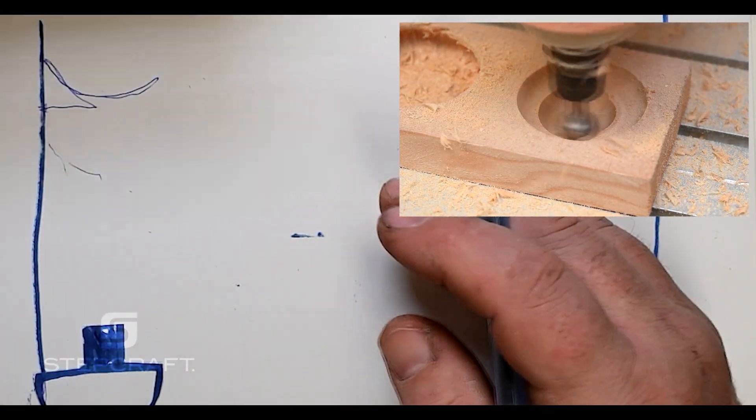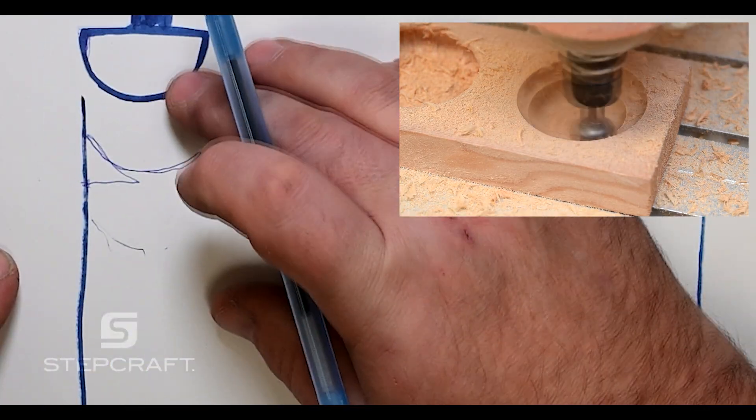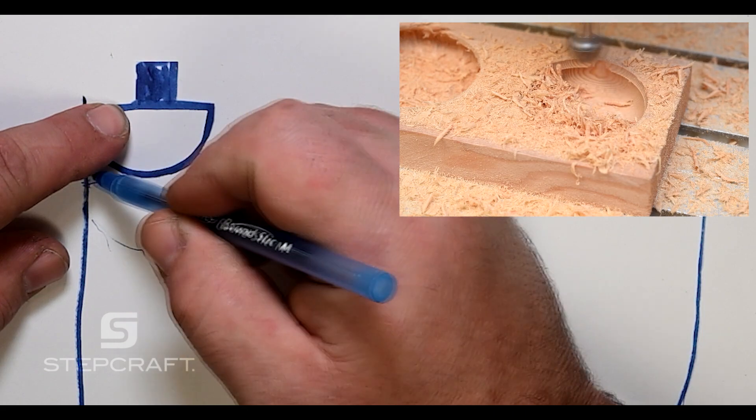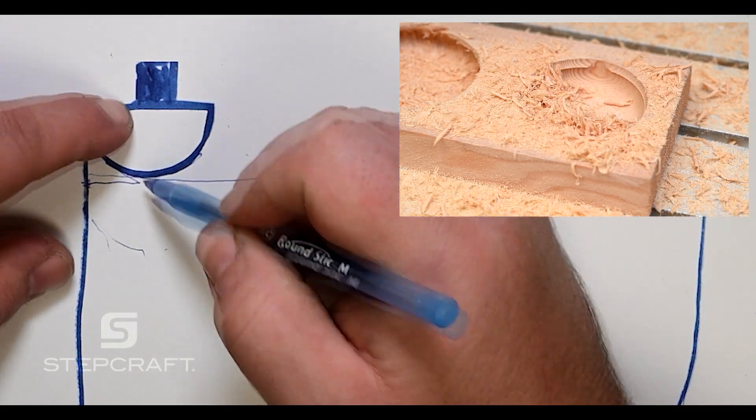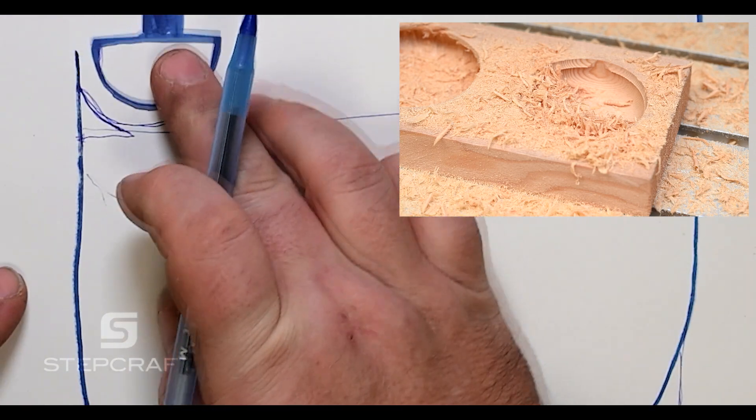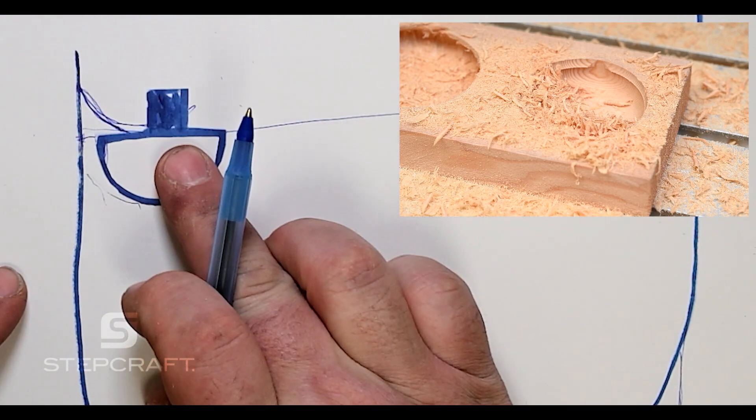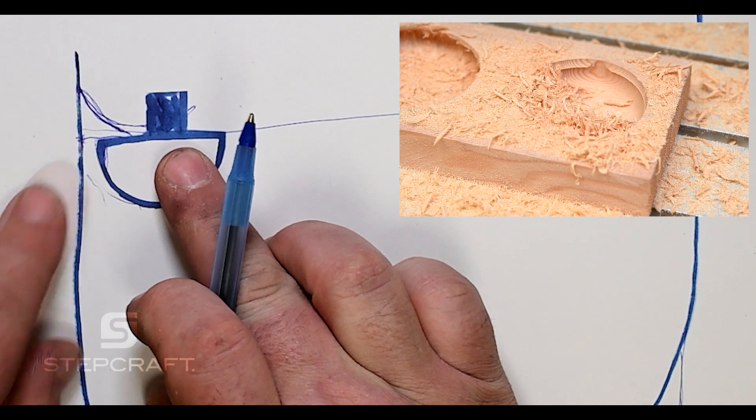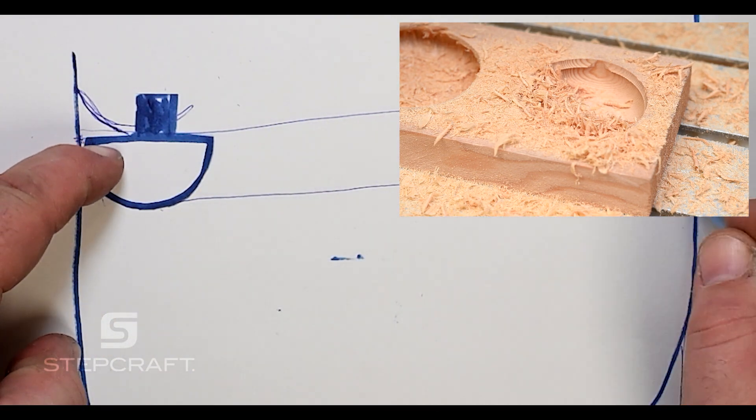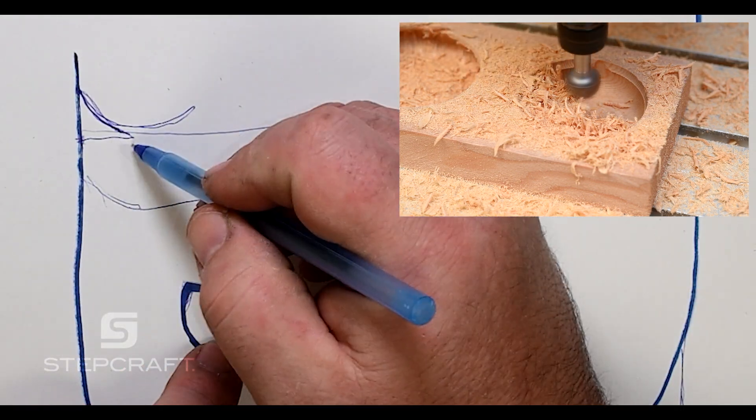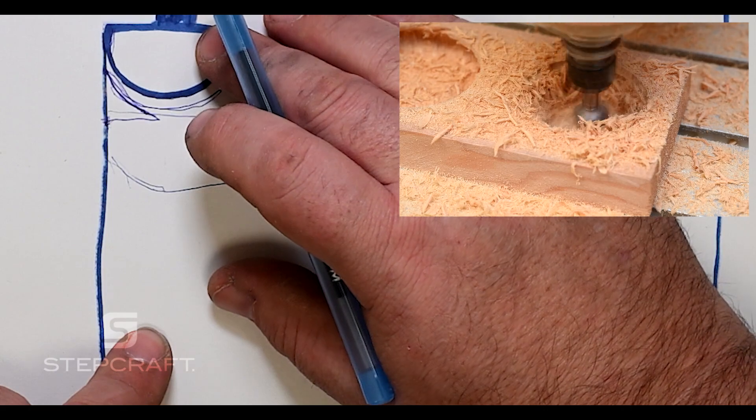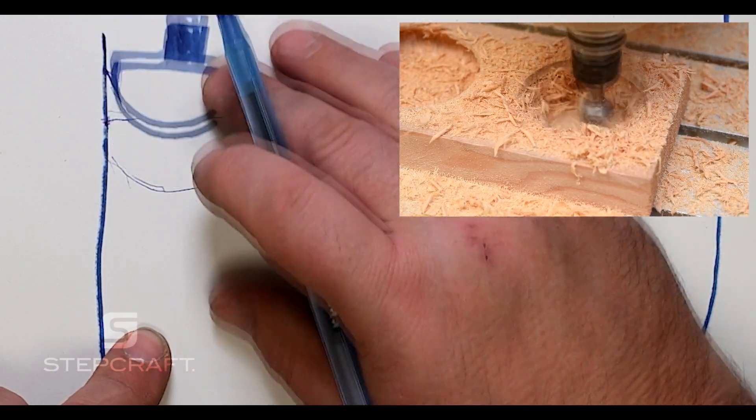What caused that lip? That lip was caused from our bit coming down for our first pass at this height - the corner of our bit cuts that part. Then we came down for our second pass and it used the flat part of the bit. We would get this little edge. You fix that by just doing more passes coming down, so your depth of cut can't be deeper than the flat part of this bit.